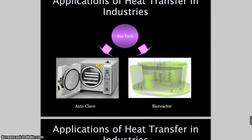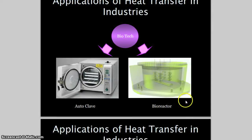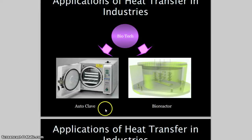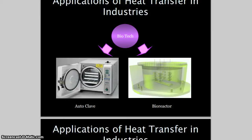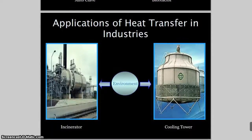In biotech, heat transfer is mostly used in autoclaves and bioreactors. A bioreactor is basically like a kettle where you can control the temperature. An autoclave heats up to 121°C or 160°C for a certain amount of time to kill bacteria — this also involves a heat exchanger.